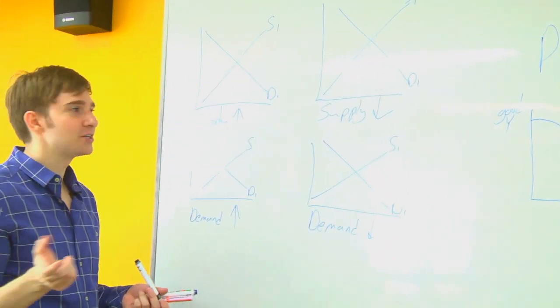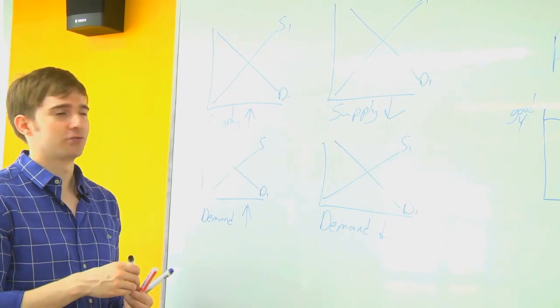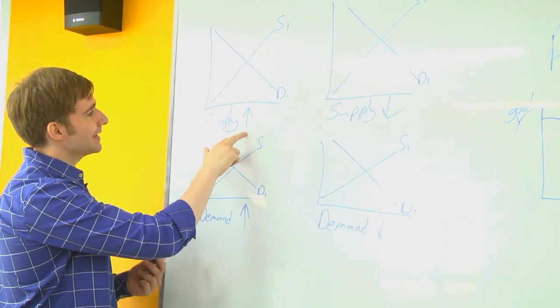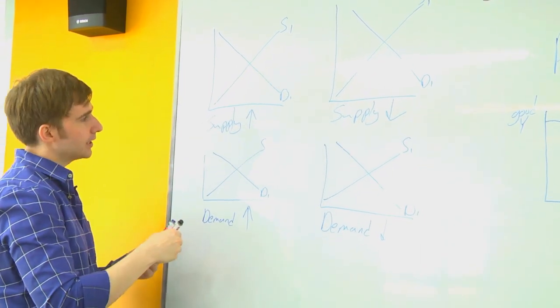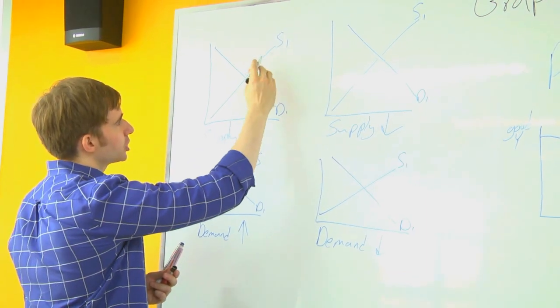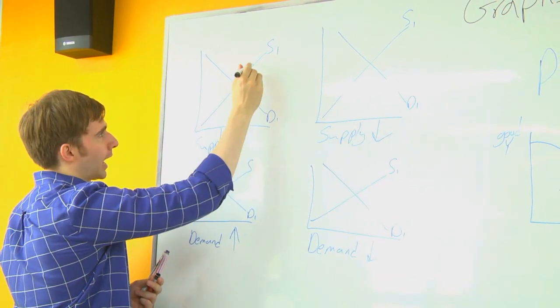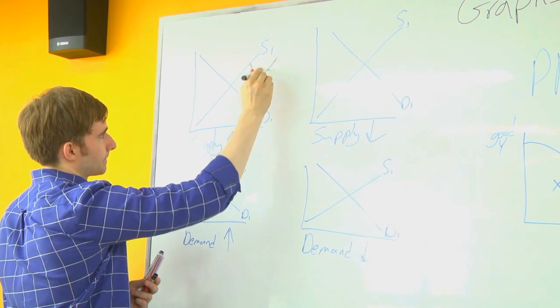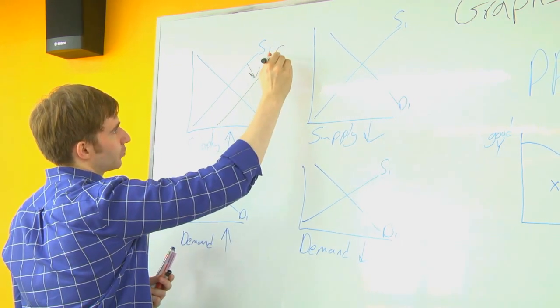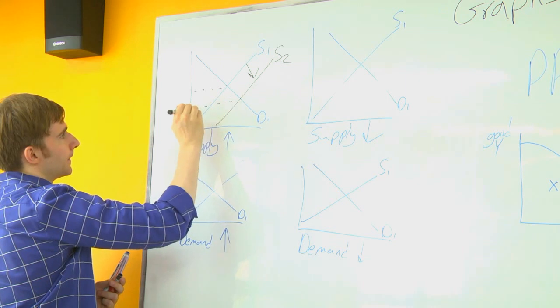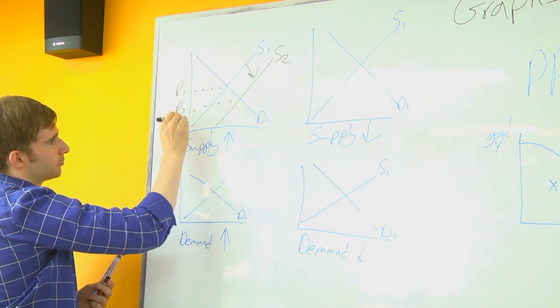All right. Hopefully you finished. If not, let's go over the answers. Supply increases. When supply increases, it's going to shift down to the right, from S1 to S2, from P1 to P2.